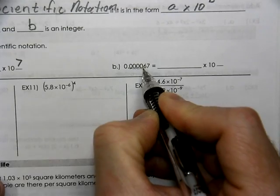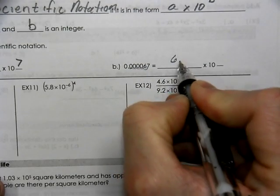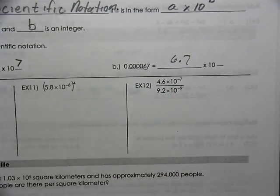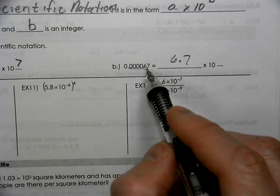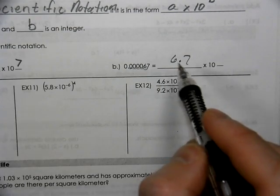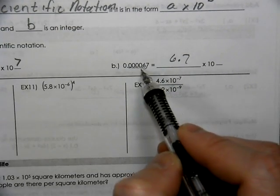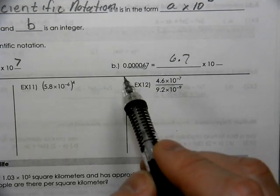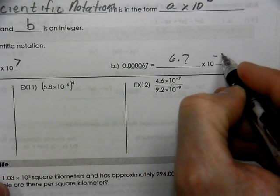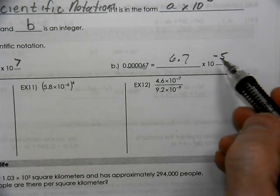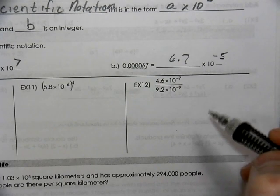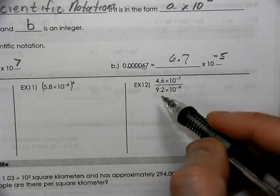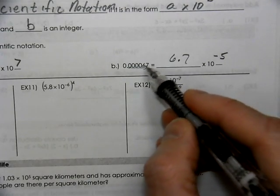Here we need to move our decimal spot over to get 6.7. If we have 6.7, what do we have to do with the 10 — multiply or divide to make that tiny number? When we move the decimal spot to the left to produce the number, it's going to have a negative exponent. The negative exponent means that you are dividing, not multiplying. So you're going to make the final answer small because you're moving it over 5 spots.